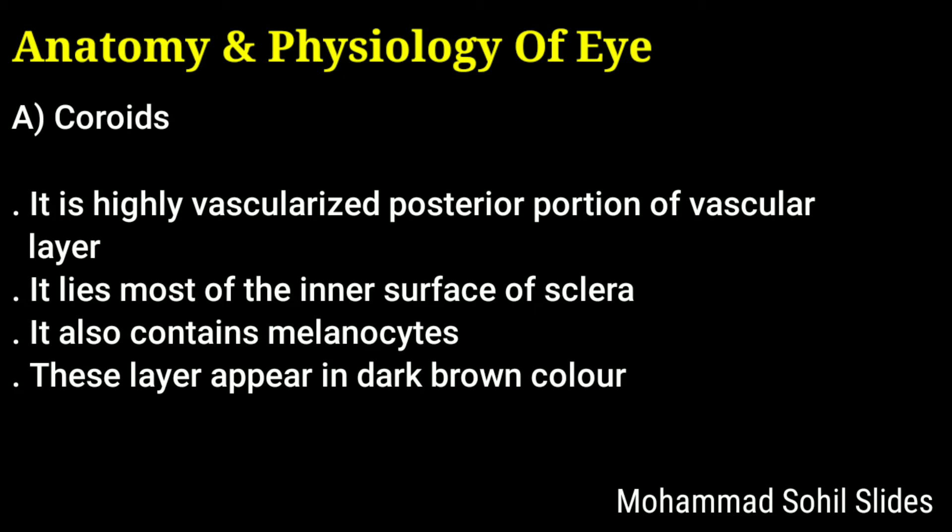The choroid contains melanocytes, and these melanocytes produce melanin pigments, which is why this layer appears dark brown in color. Melanin acts as a light absorbent and prevents the reflection and scattering of light, so the image passed onto the retina remains clear and sharp.